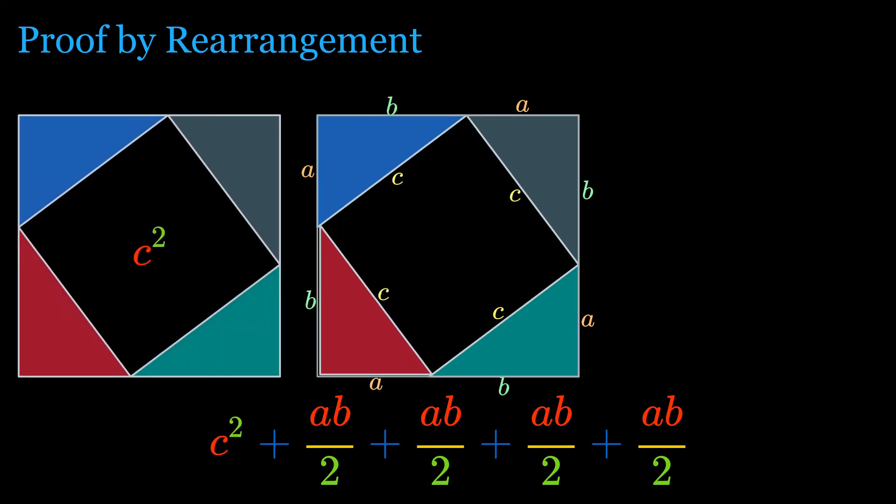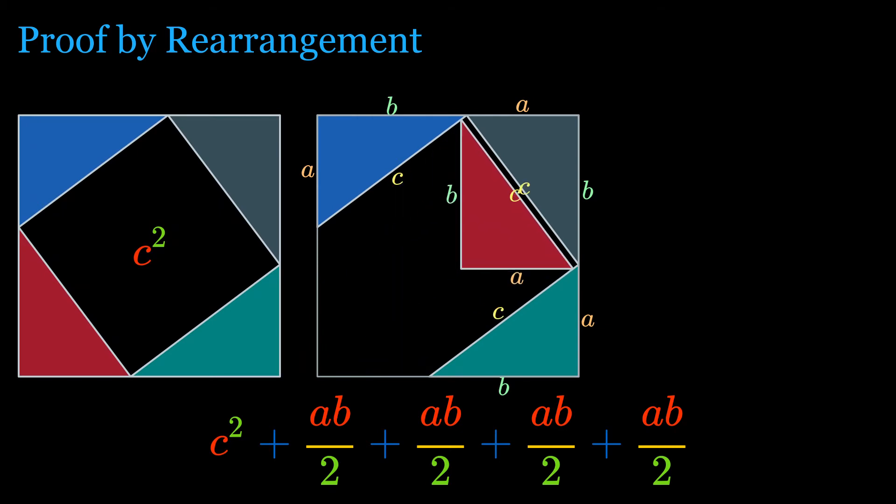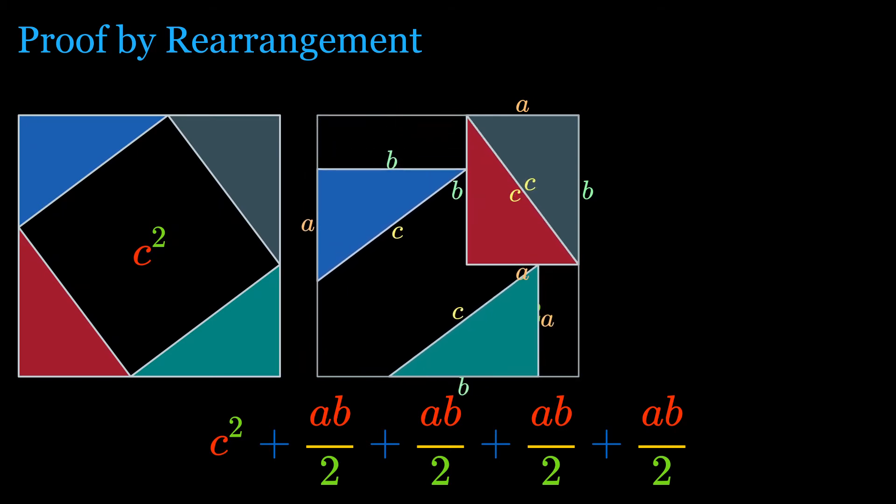However, it is also equal to the sum of the areas of the square with sides A and B, as well as the four triangles.